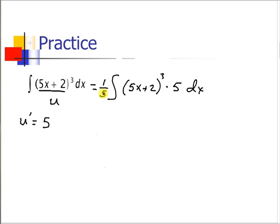Because if we rewrote this 1/5th times 5 is 1, we still have our original problem. Now we have our u to the nth and our u' so it matches our formula.